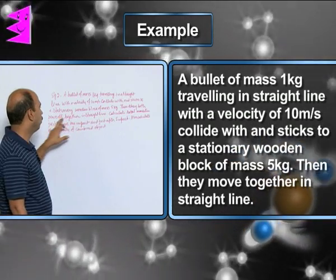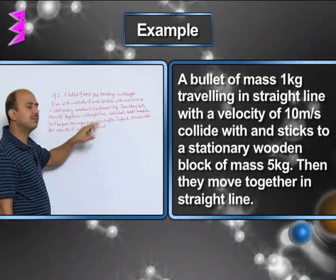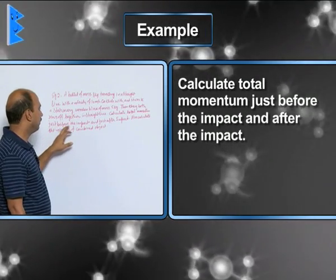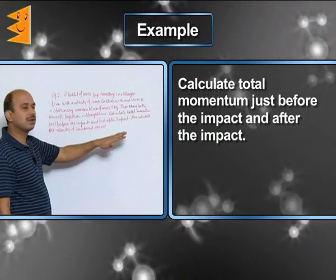collides with and sticks to a stationary wooden block of mass 5 kg. Then they both move off together in a straight line, that means in the same straight line. Calculate total momentum just before the impact and just after the impact.